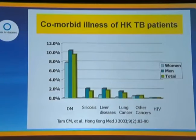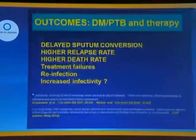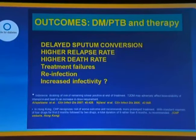In Hong Kong, if you look at comorbid illness in TB patients, you can see that diabetes way outweighs all of the other comorbidities, including HIV infection. So that sets the scene for the disease. As for outcomes, treatment is not as effective — the main problems are delayed sputum conversion in the context of diabetes, higher relapse rate, higher death rate, more treatment failures, more reinfection, and possibly increased infectivity.